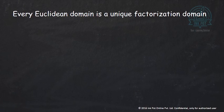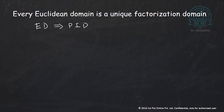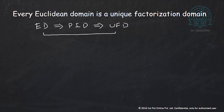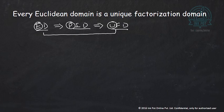It follows easily that every Euclidean domain is a unique factorization domain, because any Euclidean domain is a principal ideal domain (as we just showed), and every principal ideal domain is a unique factorization domain. You can remember this relation using the first letters: ED implies PID implies UFD. However, the converse need not be true — UFD does not imply PID, and PID does not imply ED.